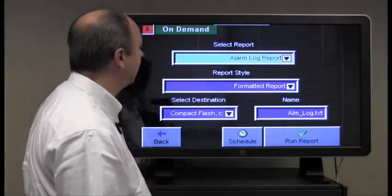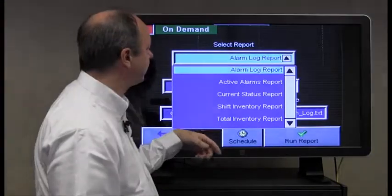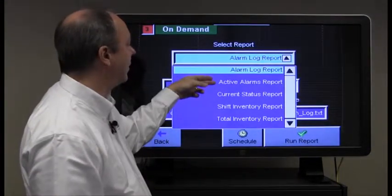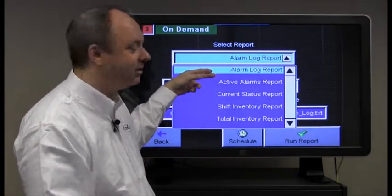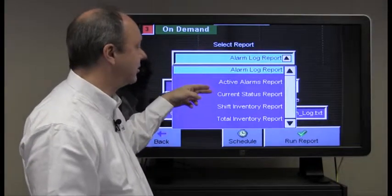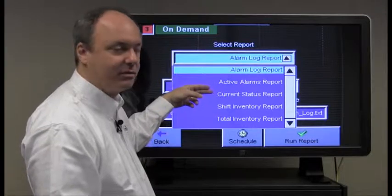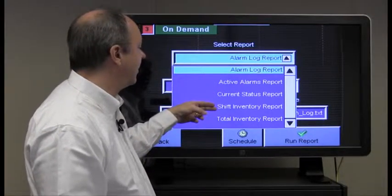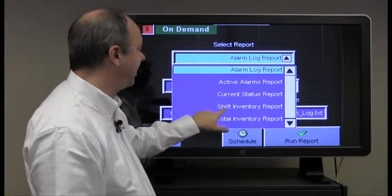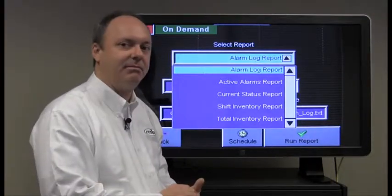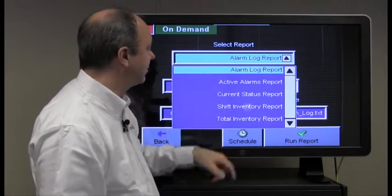So let's return to schedule report and we set up the alarm report. Let's go and set up a different type of report. You could do the active alarms and it actually works the exact same way that we just covered, as does the current status report. The shift inventory, the shift report works a little bit different because it's based on a shift time. So let's select the shift report.